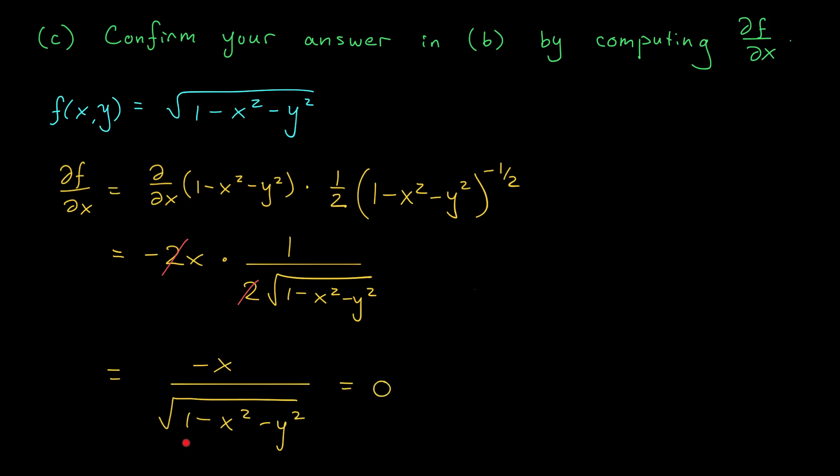We want to know where this expression is equal to 0. Well, notice that this is a fraction. And the fraction is equal to 0 if and only if the numerator is 0. So this expression is going to be 0 when x is 0.